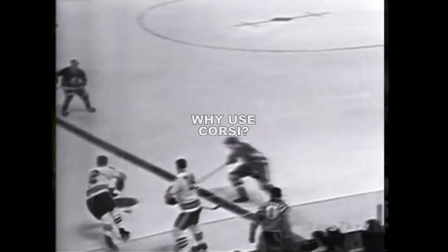To recap: a shot directed at an opponent's net would result in a positive Corsi number, while a shot by the opponent on your own net would result in a negative Corsi.